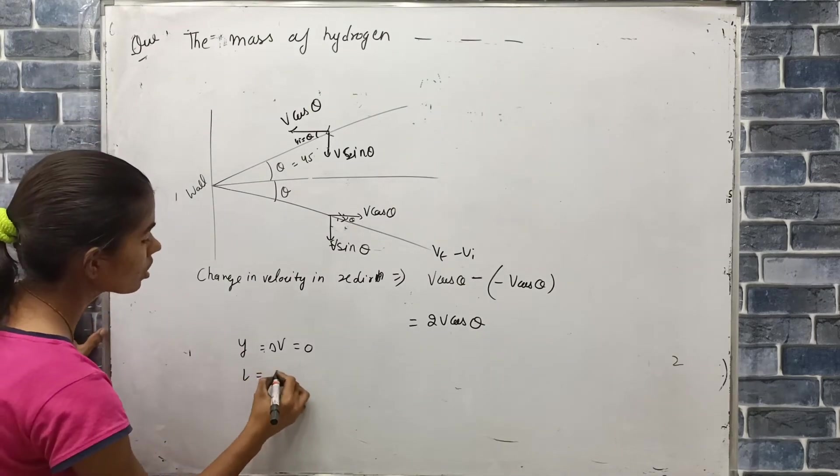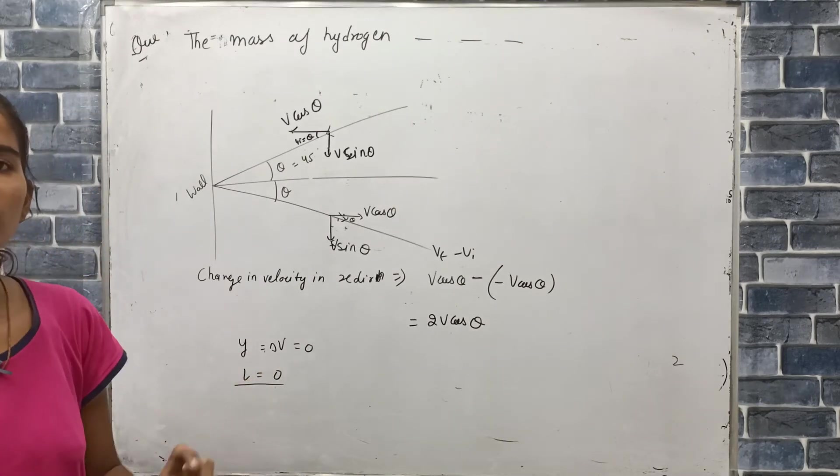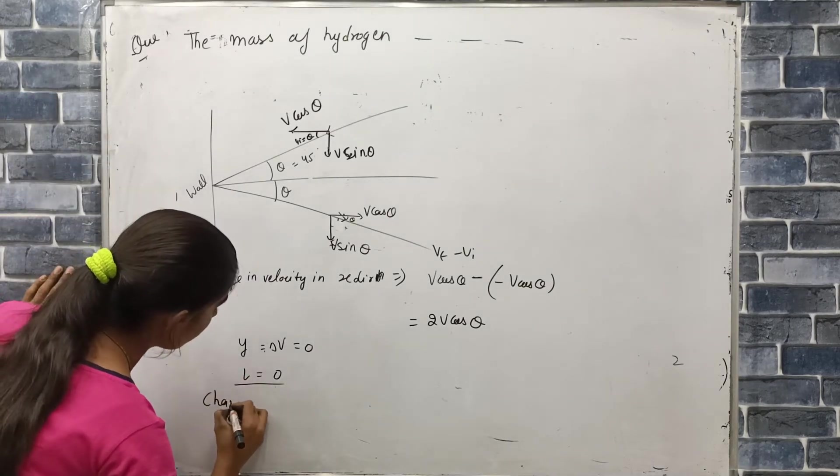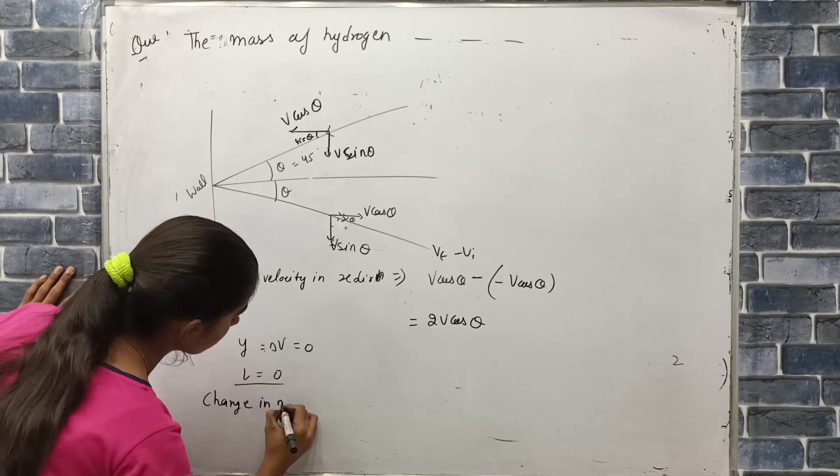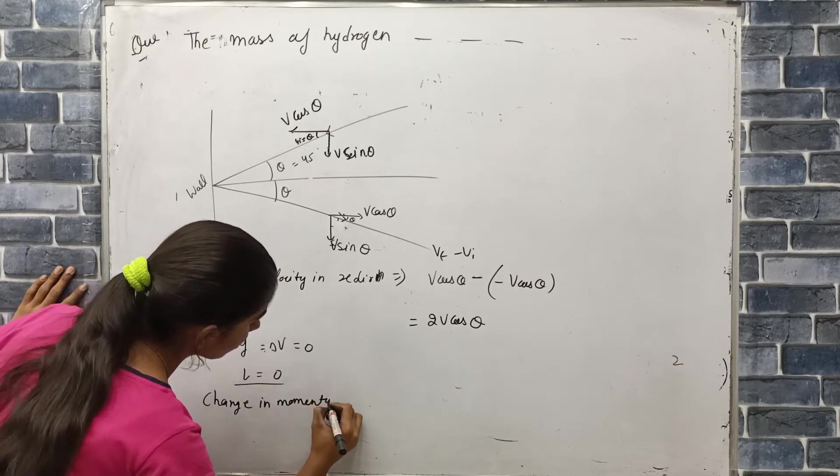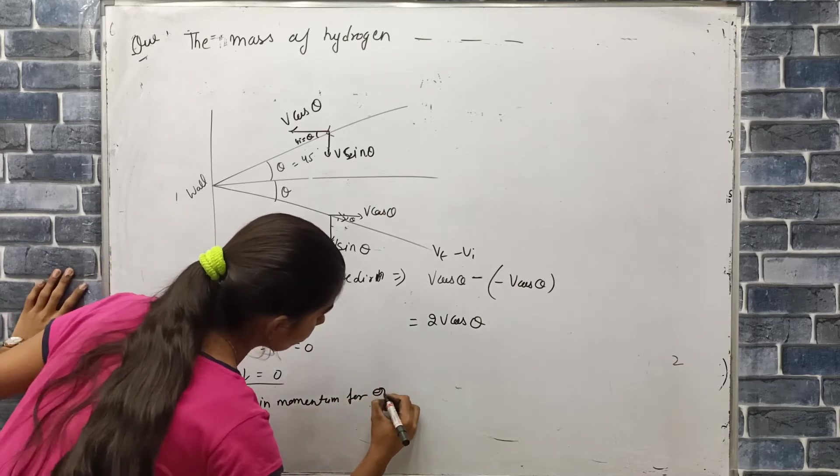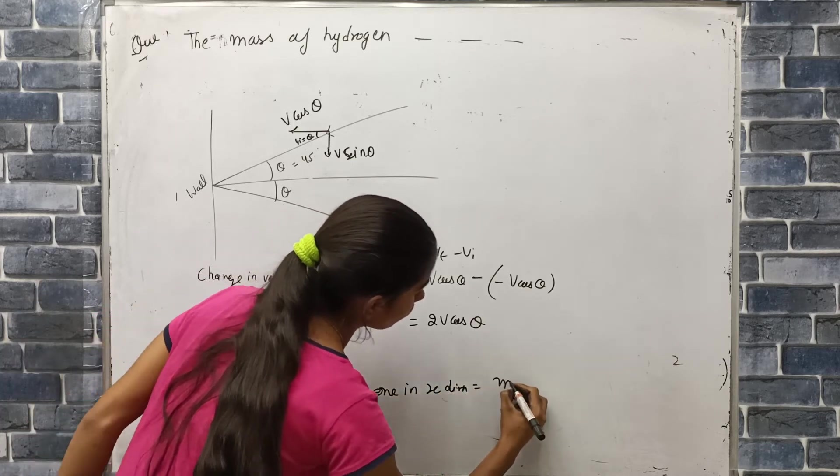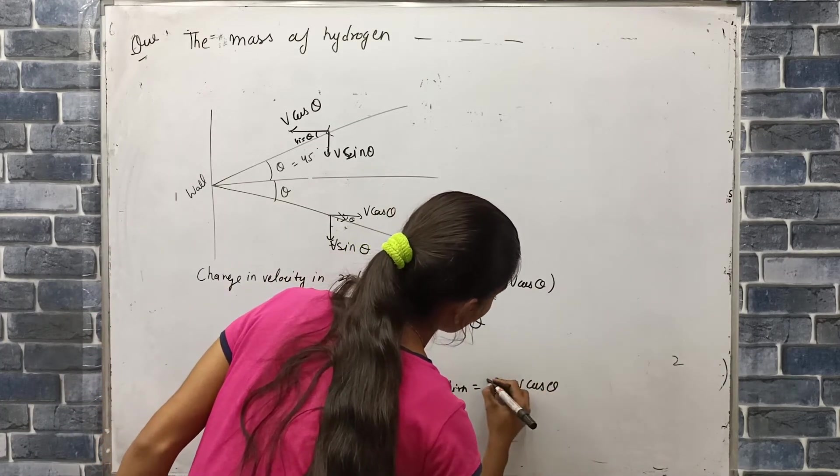What will momentum be? Zero will be in y-direction. So, change in momentum for one molecule in x-direction what will happen? m into 2V cos theta.